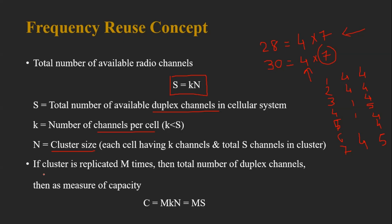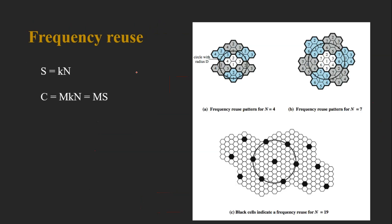To find the overall system capacity, we need to determine how many times the cluster is replicated. If the cluster is replicated M times, then the system capacity C is given by C = M × k × N, which simplifies to C = M × S. For instance, a cluster of size N=4 replicated multiple times, or N=7 replicated several times, each gives a different overall system capacity.